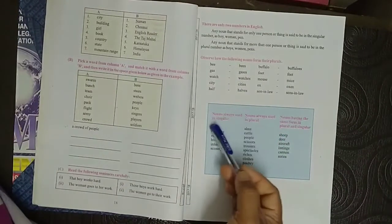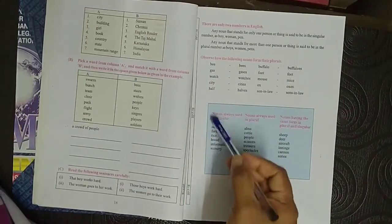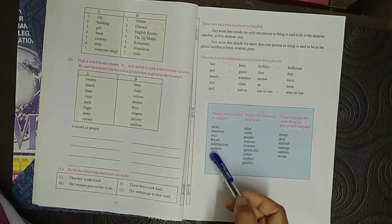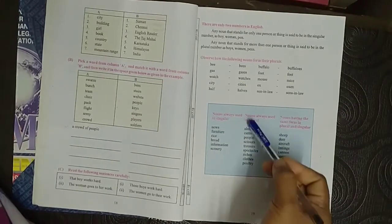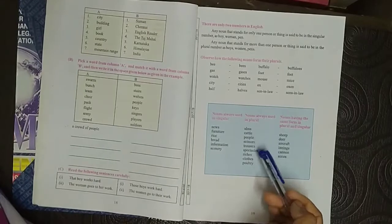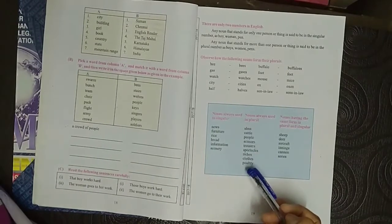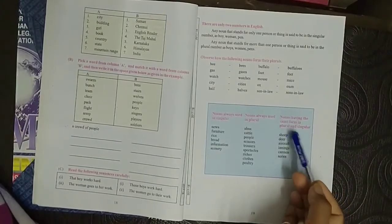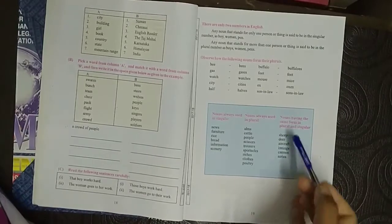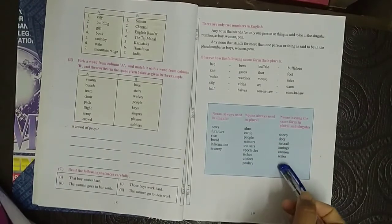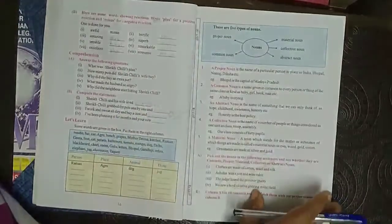Here are some nouns which are always used in singular. These nouns are not converted into plurals like news, furniture, rice, bread, information, scenery. Some nouns always used in plural, they have no singular form like alms, cattle, people, scissors, trousers, spectacles, riches, clothes, and poultries. And some nouns have the same form in plural and singular like sheep, deer, aircraft, innings, cannons, series. So here in this video I explain you the nouns and their types.